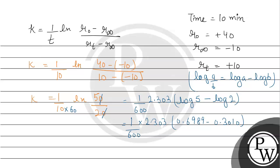And this value comes out to be 0.3979. So it will be multiplied by 0.3979 and if we multiply this with 2.303, so it will be 0.916 divided by 600.